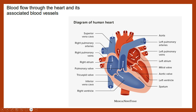As blood moves from the left atrium into the left ventricle, it will pass through the other AV valve — the mitral, or bicuspid, valve — to fill up the left ventricle.